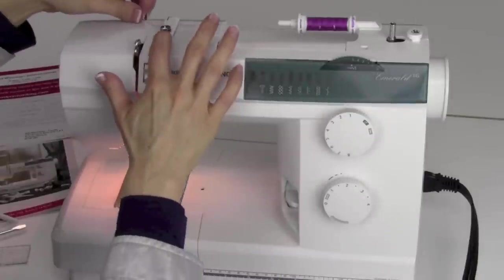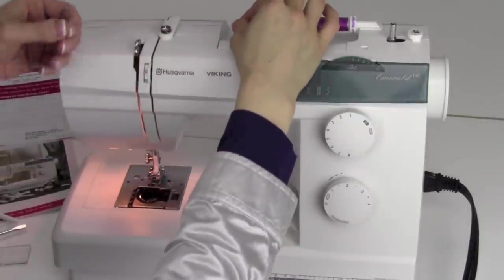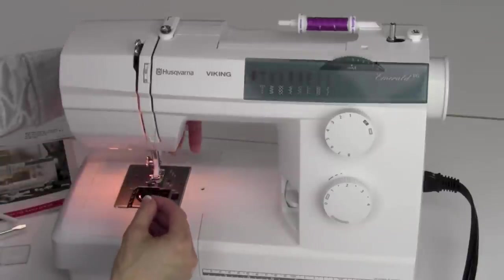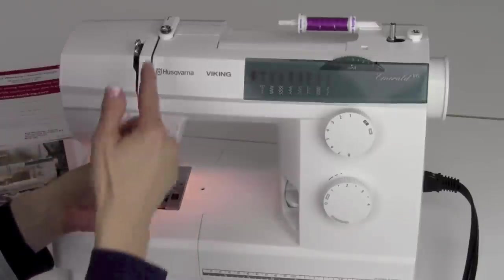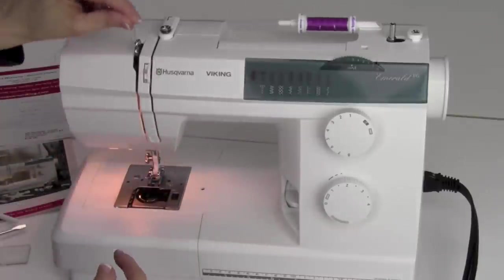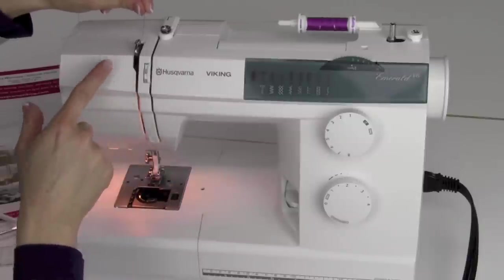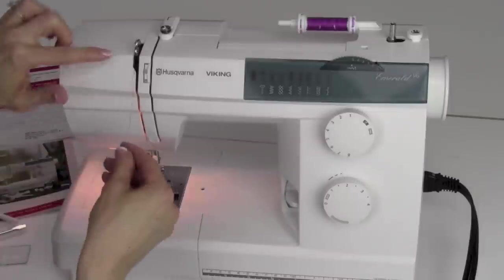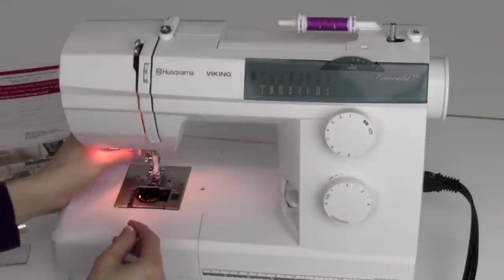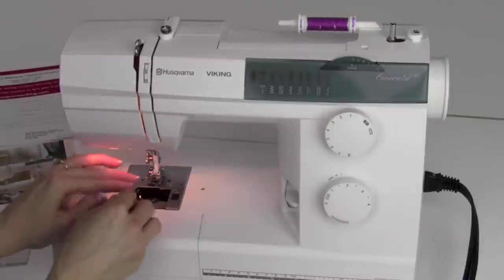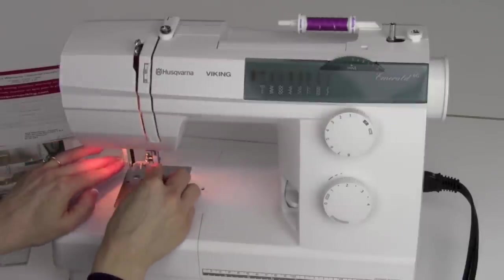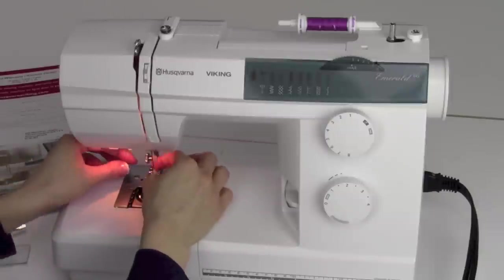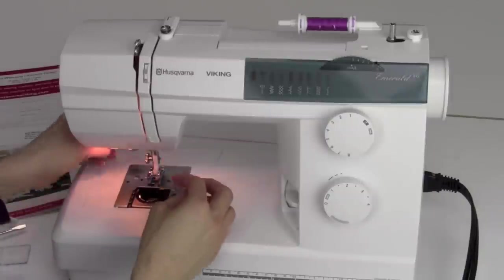Let's go ahead and thread the machine next. When we go to thread the machine, we don't use the pretensioner. Go ahead and follow the arrow straight down. Do make sure your presser foot is up. If it's down, then your thread's not going to get into all the places it needs to go. Come up, and we're going to go all the way back on the right side, bring it to the left, and then all the way down. It'll hook into this top little take up lever. There's one guide at the top of the needle, and then we'll give you an up close use of the needle threader in just a second.